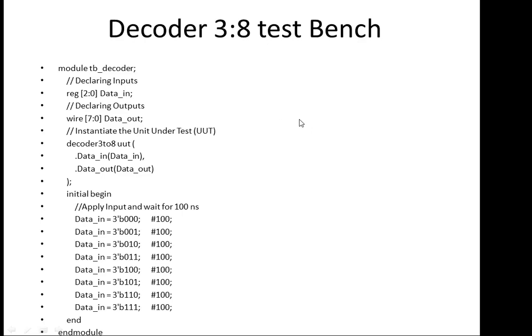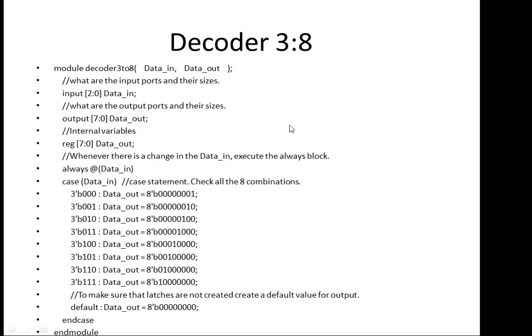3-to-8 decoder including test bench. This is a 3-to-8 decoder — so 3 inputs and 8 outputs, meaning 3 bits will decode to 8 combinations. We define the module as 'decoder' with 'data_in' and 'data_out'. The input 'data_in' is declared as 3 bits [2:0] and the output 'data_out' is 8 bits.